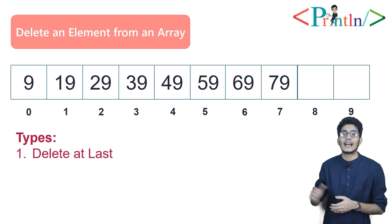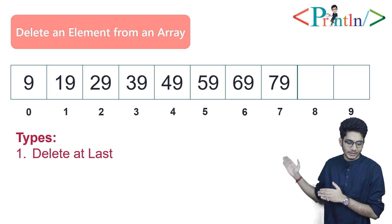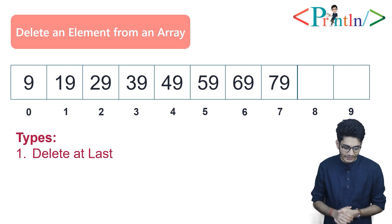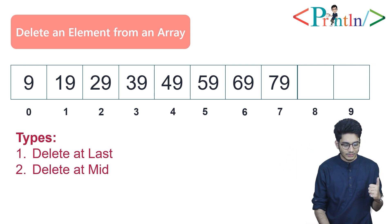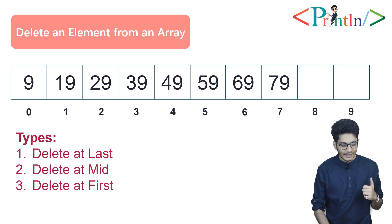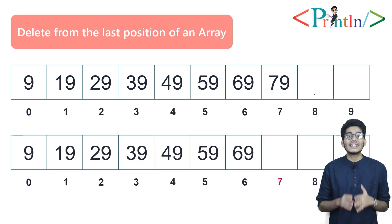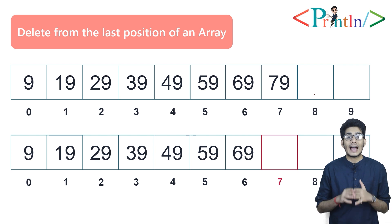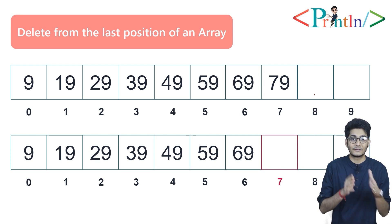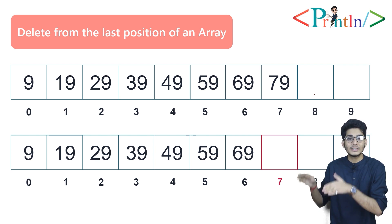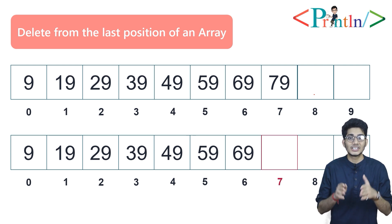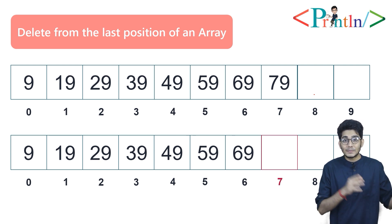As you can see on my screen, one array is declared — that is 9, 19, 29, up to 79. We can delete from the last, we can delete from the middle, and we can delete from the first. For deleting any element from an array, we have to perform a shifting operation, which we'll also talk about in this video.